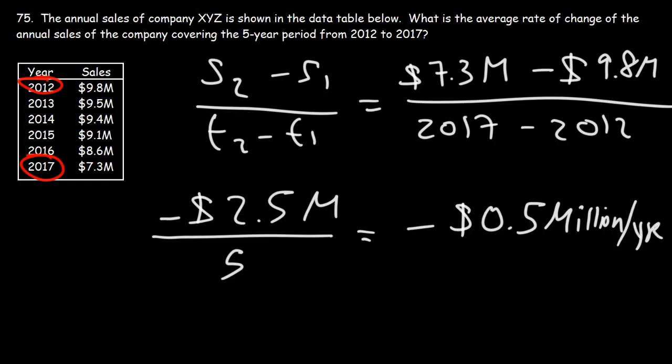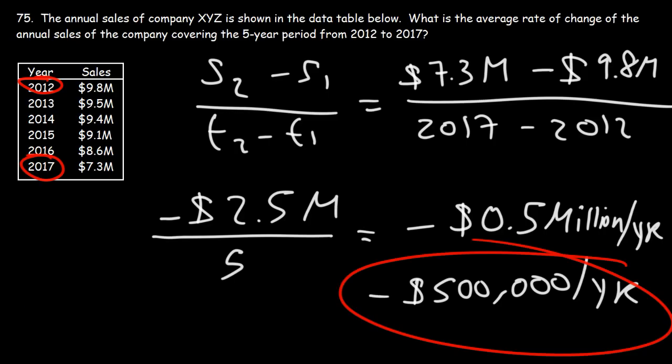So the average rate of change in the annual sales of the company per year is negative 0.5 million. So on average, every year, the annual sales is decreasing by half a million or 500,000. So you don't want to buy the stock in this company. They're not doing too well. So now you know how to calculate the average rate of change of something. So that's it for this video. Thanks for watching.